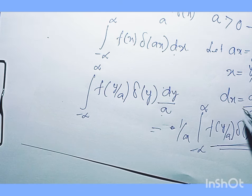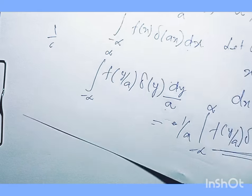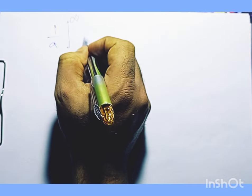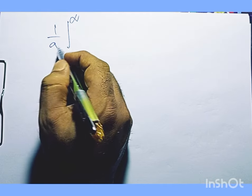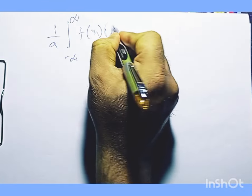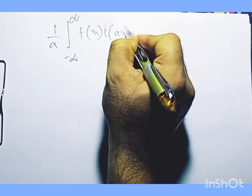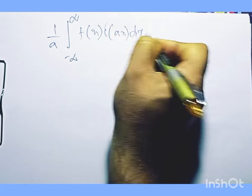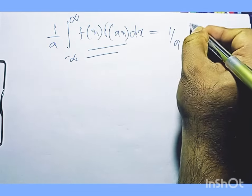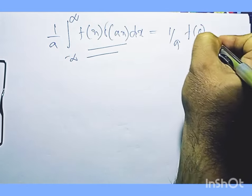Substituting back — replacing y/a with x, y with ax, and dy with dx — we obtain (1/a) times the integral of f(x)·δ(ax) dx, and this equals (1/a)·f(0). This confirms the result δ(ax) = (1/a)·δ(x).